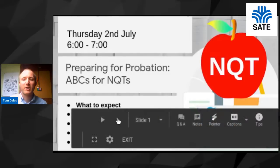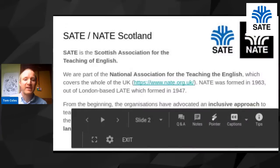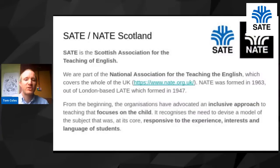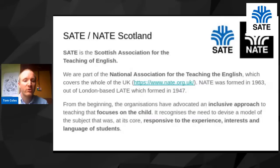We have some fantastic people joining us today, but before we get to them, I just want to talk to you a little bit about what SAIT is. SAIT is the Scottish Association for the Teaching of English, and we are part of the UK-wide National Association for the Teaching of English. NAIT was formed in 1963 out of a London organisation which formed in 1947, so we've been around for a long time. SAIT is an organisation that tries to focus on the child in English teaching, being responsive to the experience, interests and language of students. We are focused on English teachers and literacy teachers across the different ages and stages, but the session today is really focused on NQTs and a lot of the things we're going to be talking about are relevant for everyone.